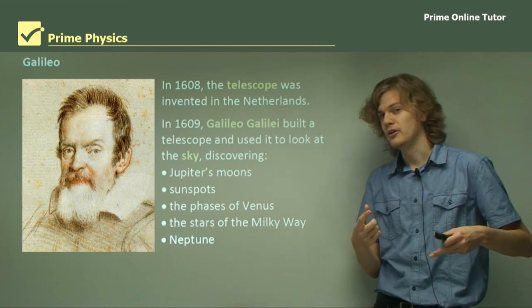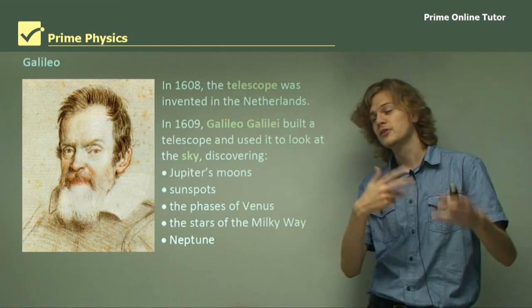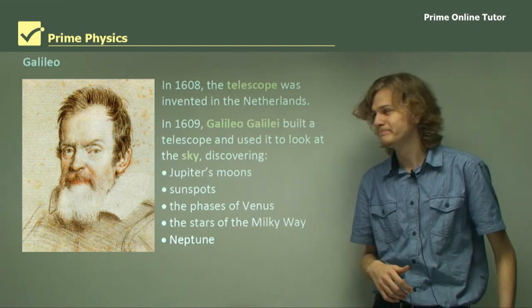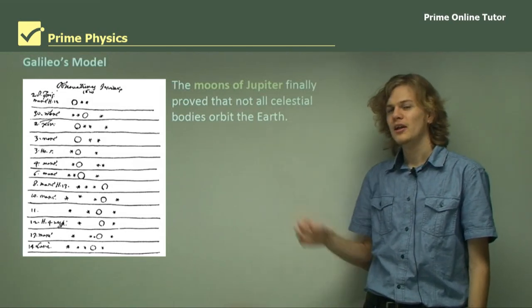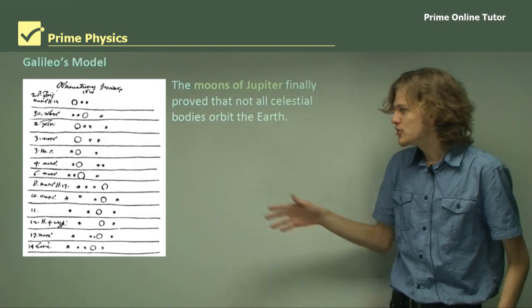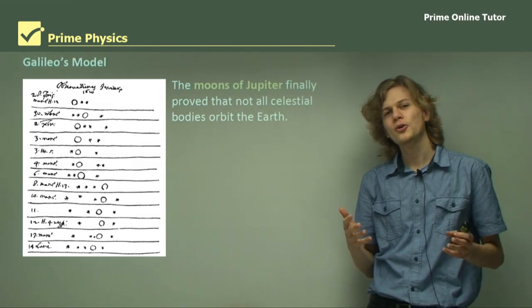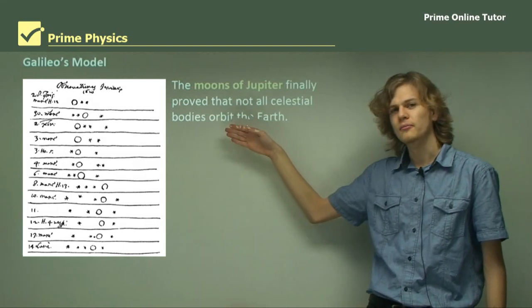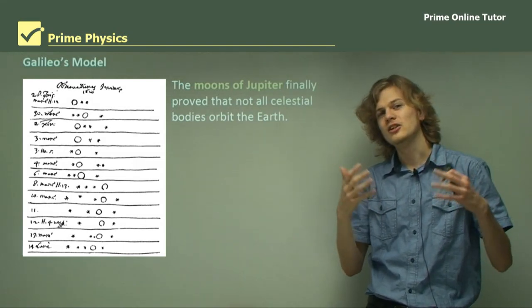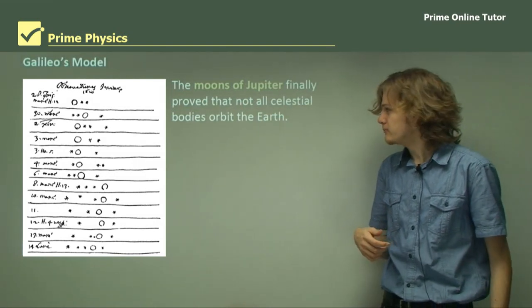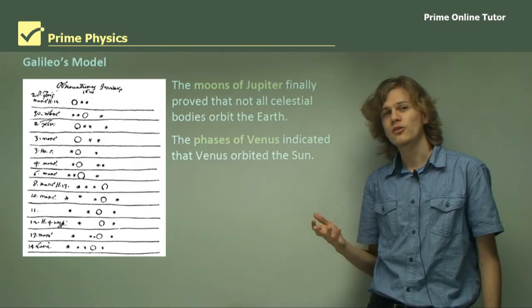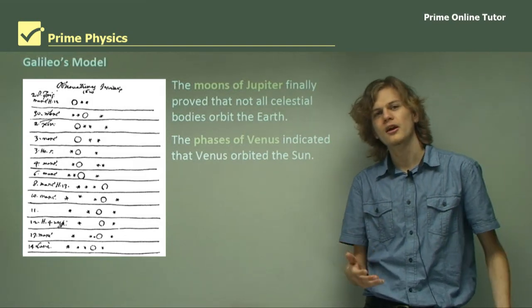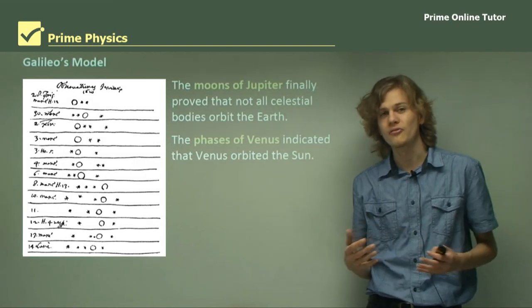Jupiter's moons go around Jupiter and not the Earth. The phases of Venus seem to indicate that Venus is going around the Sun. Sunspots seem to indicate that the Sun isn't eternal and unchanging, as Aristotle had first thought. The moons of Jupiter finally proved that not all celestial bodies orbit the Earth. We can see a photocopy of Galileo's original notebook where he first wrote down his observations of the moons of Jupiter, showing their positions on different dates, which he found could be explained by saying they were orbiting Jupiter. The phases of Venus also seemed to indicate that Venus orbited the Sun rather than the Earth.